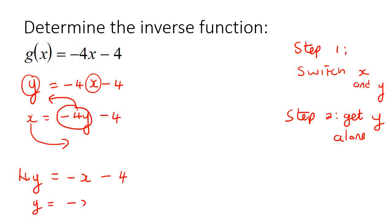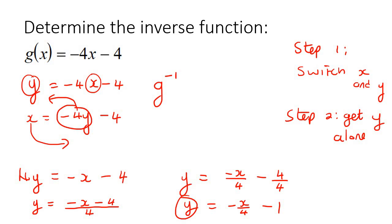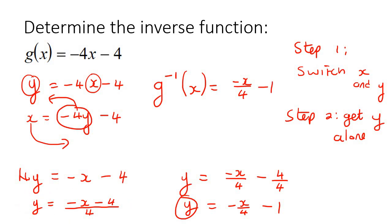You could say negative x, negative 4, and then divide all of that by 4 — or you might prefer to say negative x over 4, take away 4 over 4. You can simplify that to become negative 1. Then we rewrite the answer using g again, but because it's the inverse, you write g with a negative 1, which stands for inverse, and then go negative x over 4, take away 1. That means inverse of g.